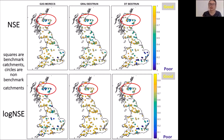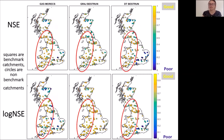Firstly, all the models tend to perform not as well in North East Scotland. A couple of reasons for this might be water storage and reservoirs, or snow melt contributions — currently none of the models have a snow model in them, and this is something we definitely want to look at in the future.